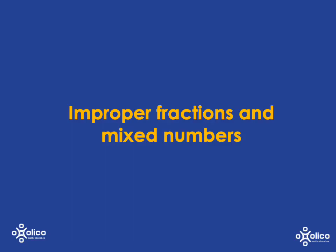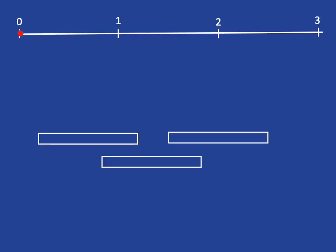We're going to look at converting between improper fractions and mixed numbers. Here I have a number line with the numbers 1, 2 and 3 on it, and I also have three whole rectangles.